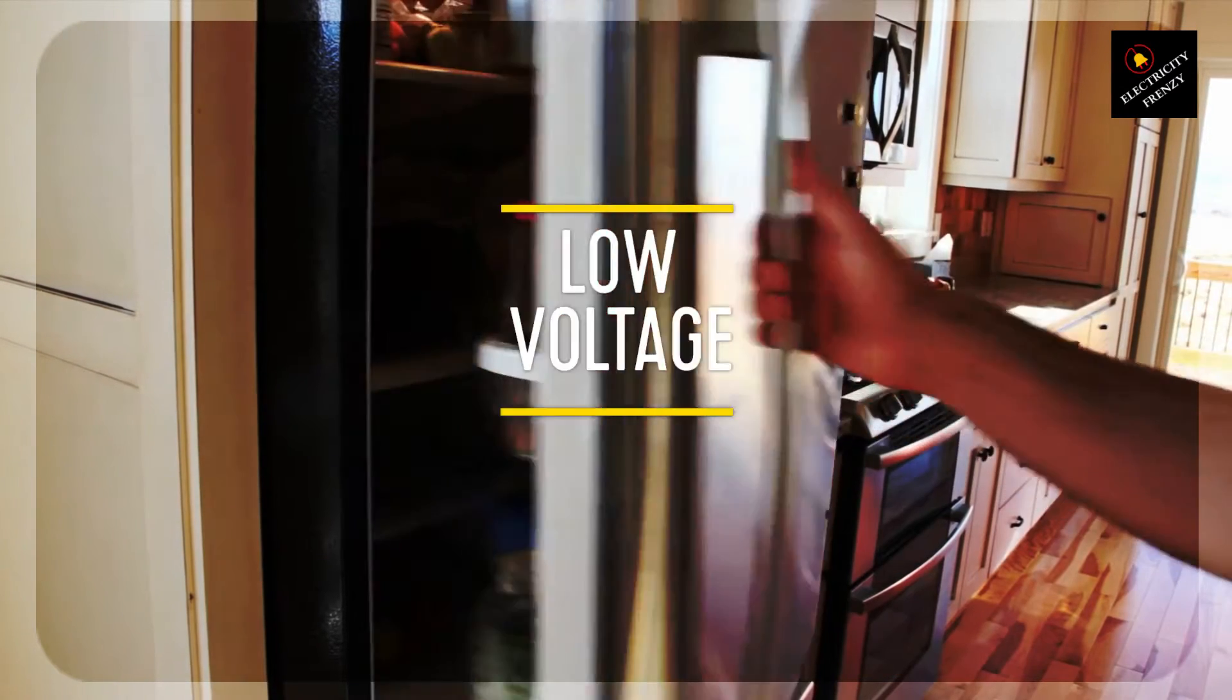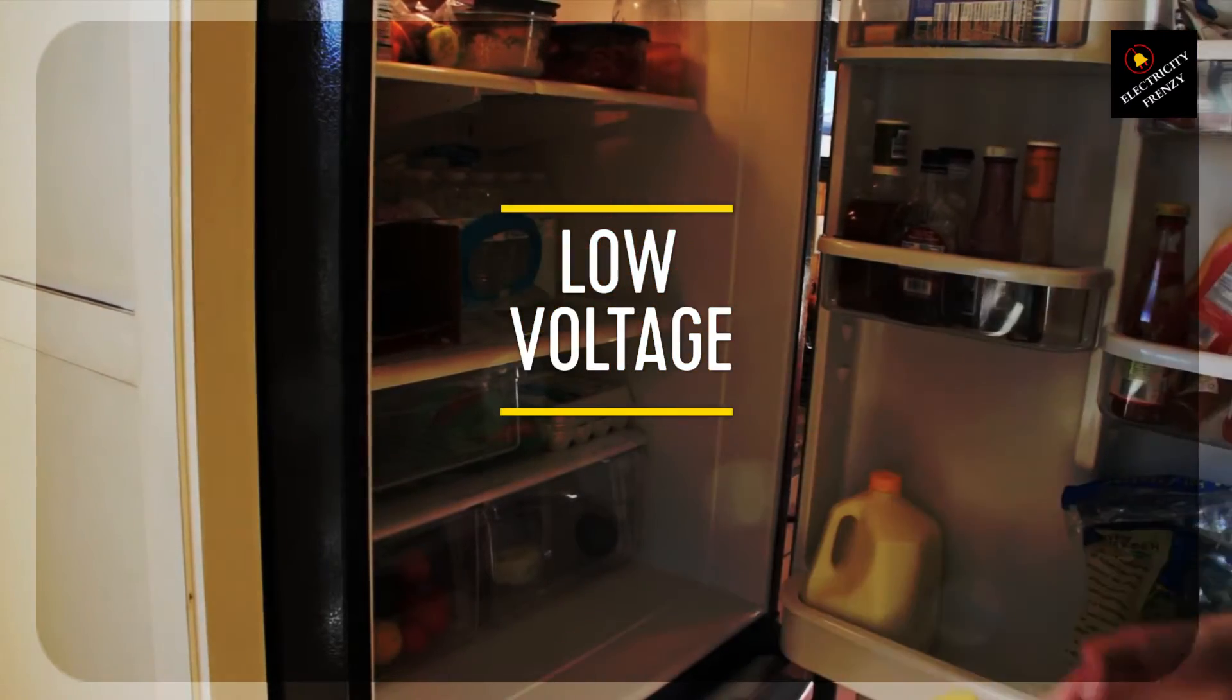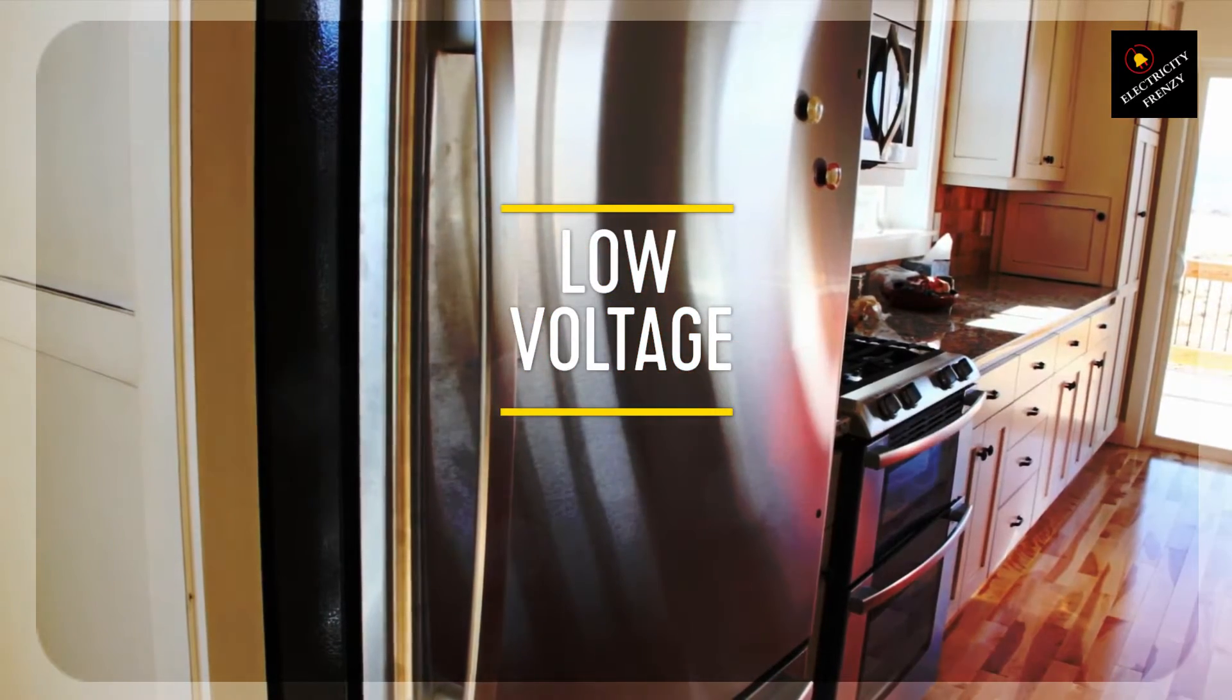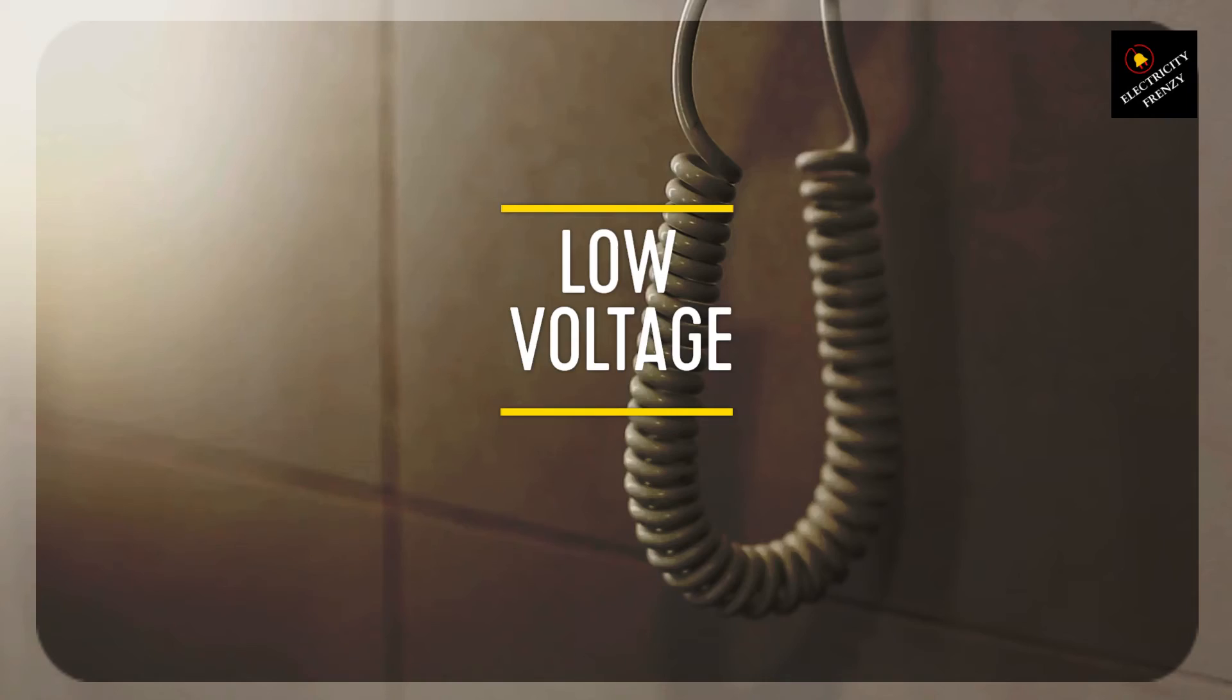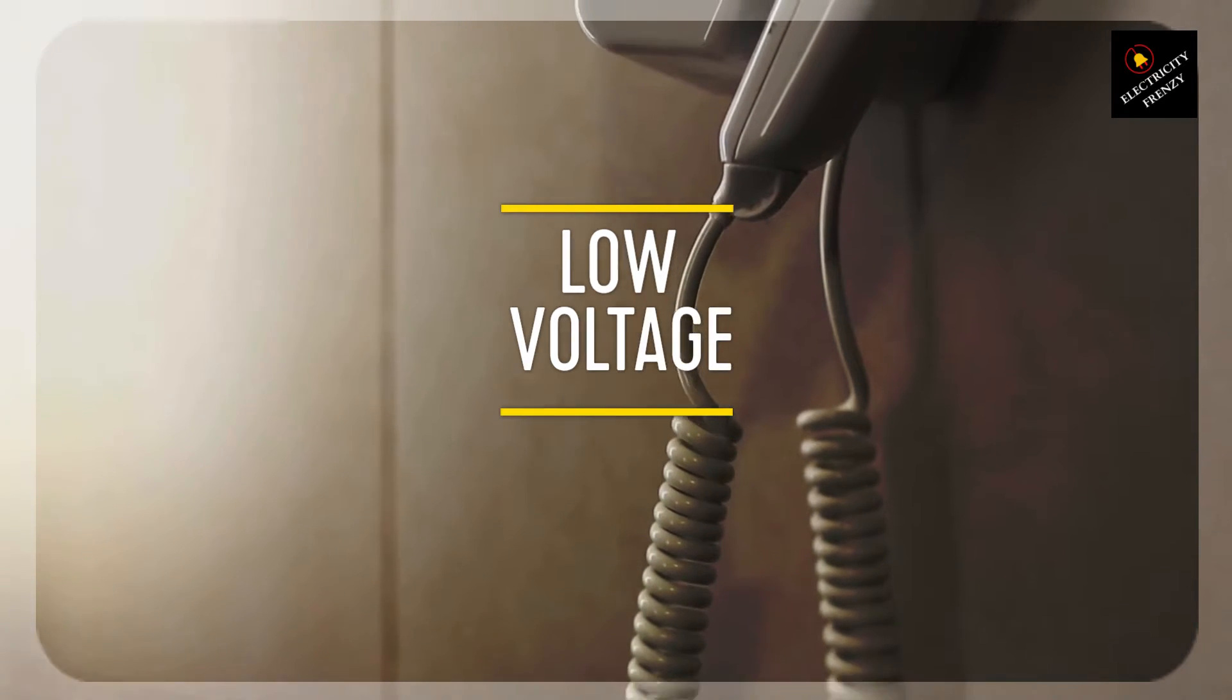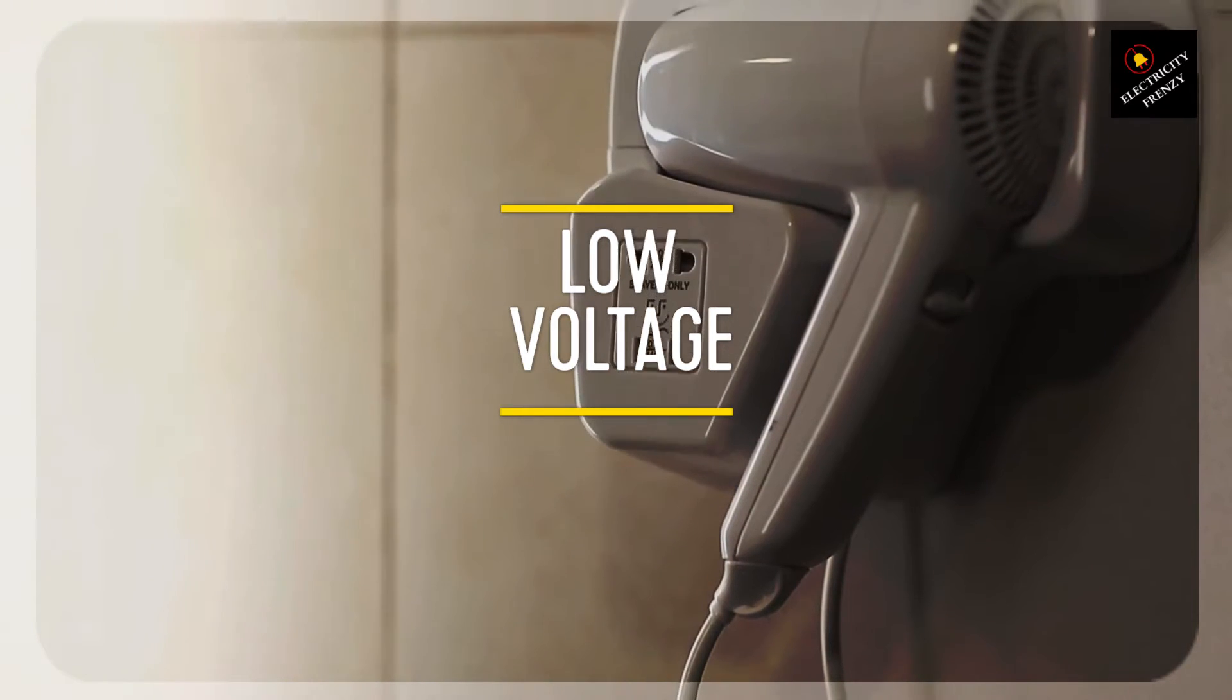Hair straighteners. If you use a hair straightener or similar heating appliances, they rely on electrical resistance to generate heat. When the voltage is low, the amount of heat they can produce is reduced. What to look out for. Your hair straightener might take much longer to reach the desired temperature, if it can at all. This can make styling your hair frustratingly slow and less effective.